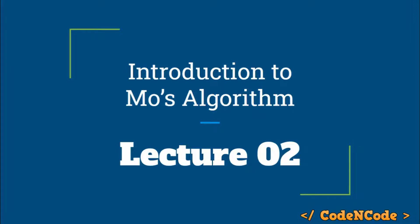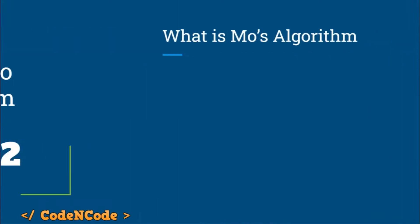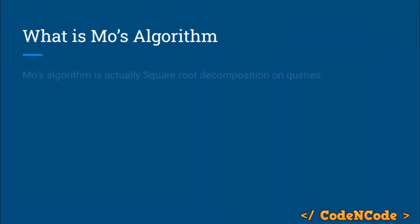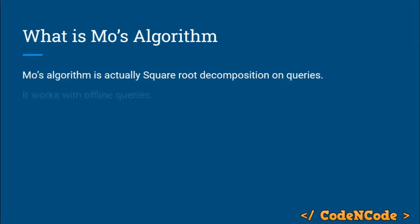Hello guys, this is Code and Code, and today we are going to have a look at the second lecture of the square root decomposition series. In this lecture we are going to talk about Mo's algorithm. Mo's algorithm is basically a square root decomposition on queries, and it works with offline queries.